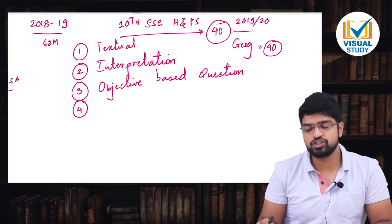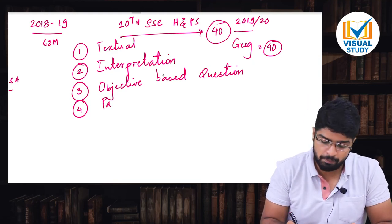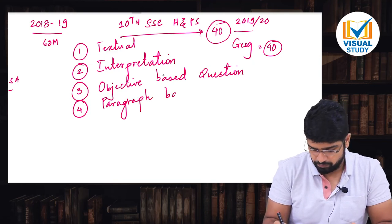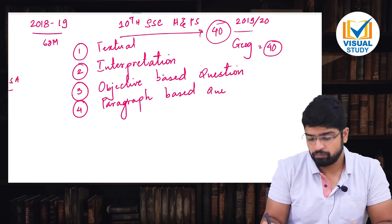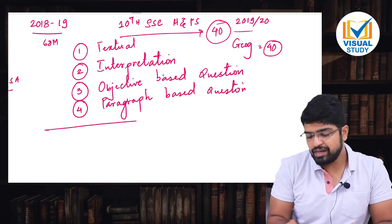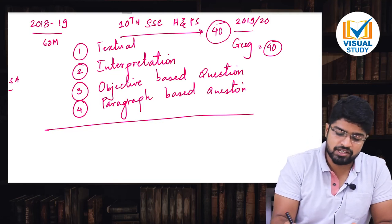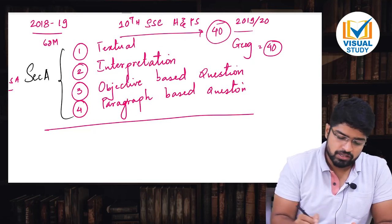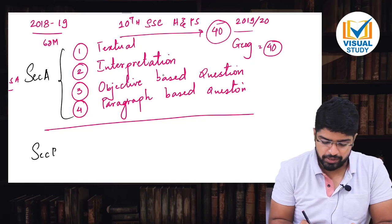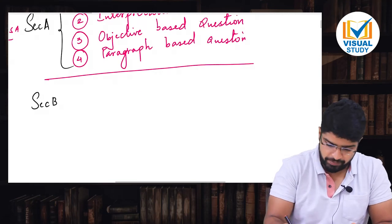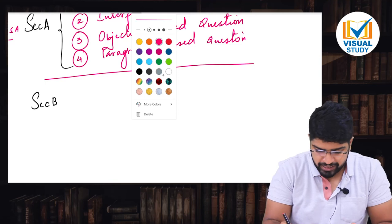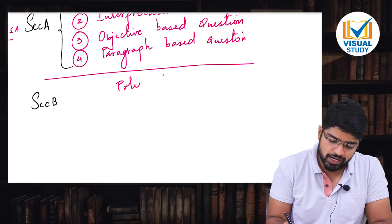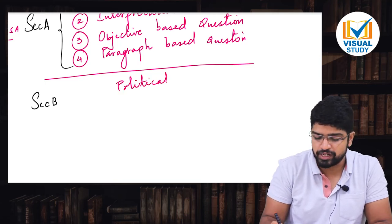Paper will be based, of course interpretation based hai, at the same time, paper will be based on paragraph based questions as well. The same paper will have, I call this as section A. This is under section A. Similarly, there will be a next part called as section B. Section B mein kya kya hai? Section B, of course paper has not categorized it, main personally aapko easy karne ke liye, comes with what is called as political science.